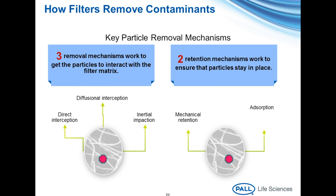There are three removal mechanisms that work to get particles to interact with a filter matrix. The first is direct interception: the removal of a contaminant or particle via physical size. If contaminants or particles are too large to pass through the filtration matrix, they are retained in or on the matrix. The second removal mechanism is diffusional interception: the removal of a contaminant or particle due to random motion as that particle passes through a filter matrix. This is primarily used to describe the filtration retention mechanism of gas filters when used to filter gas.